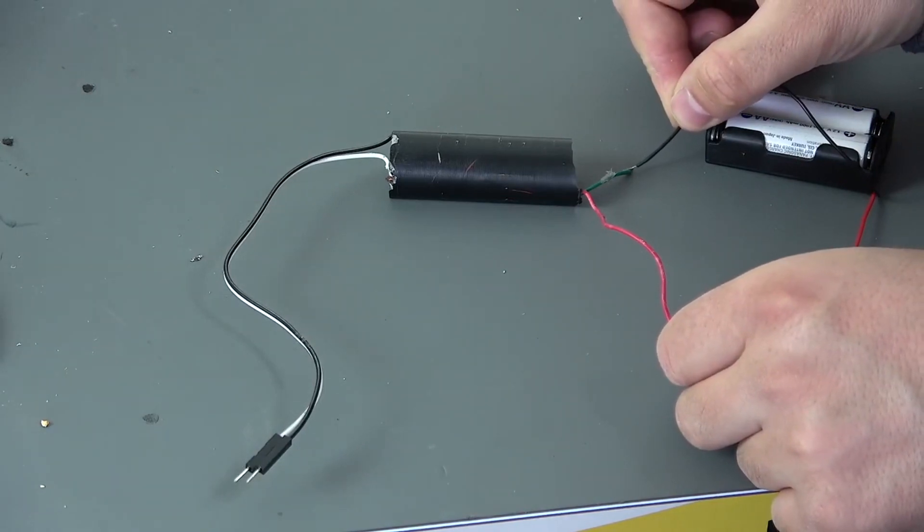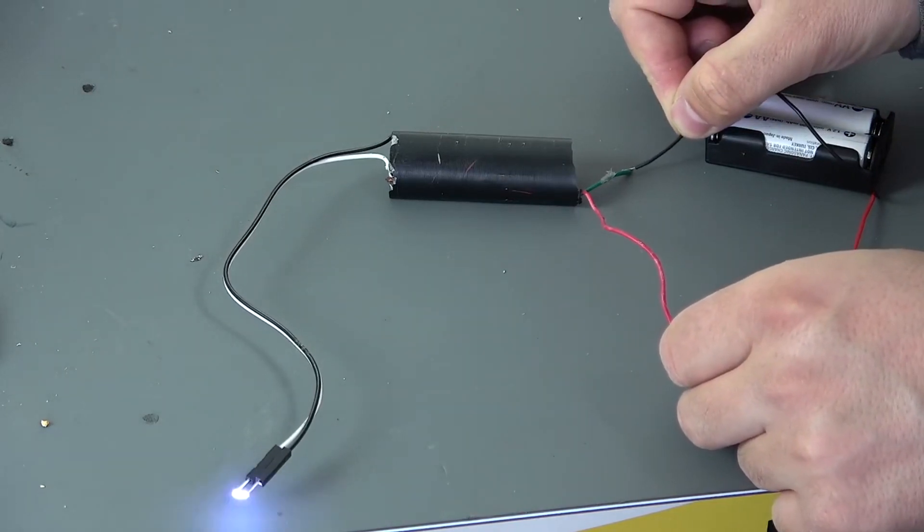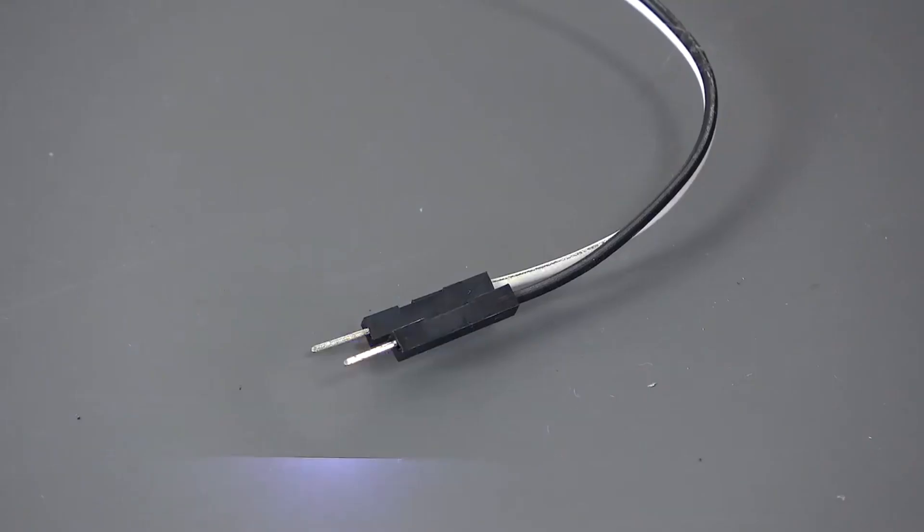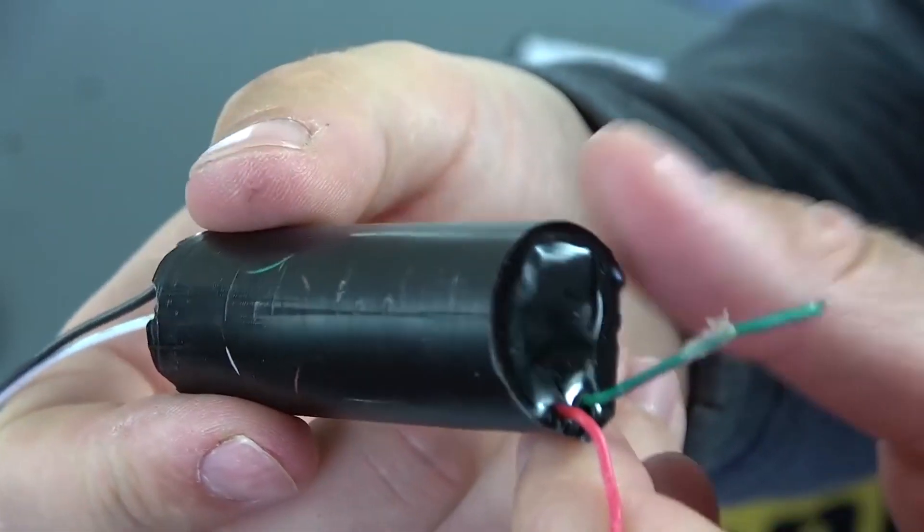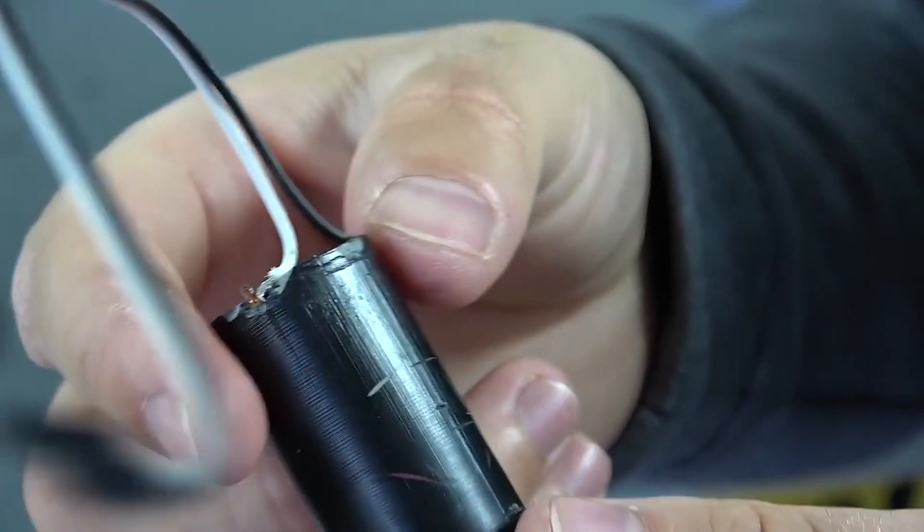Most often they are used for the manufacture of stun guns, but it works from 3 to 6 volts. And most importantly, they give out 600,000 volts. In general, this is a very powerful thing, but it will still need to be slightly modified.